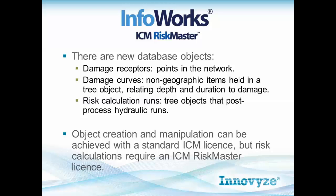In particular we need two new items in the actual model network. We have a damage receptor — these are essentially points in the network and usually relate to properties. And we have damage curves — these are non-geographic items held in the main database tree and relate the depths of flooding and duration to a damage value.